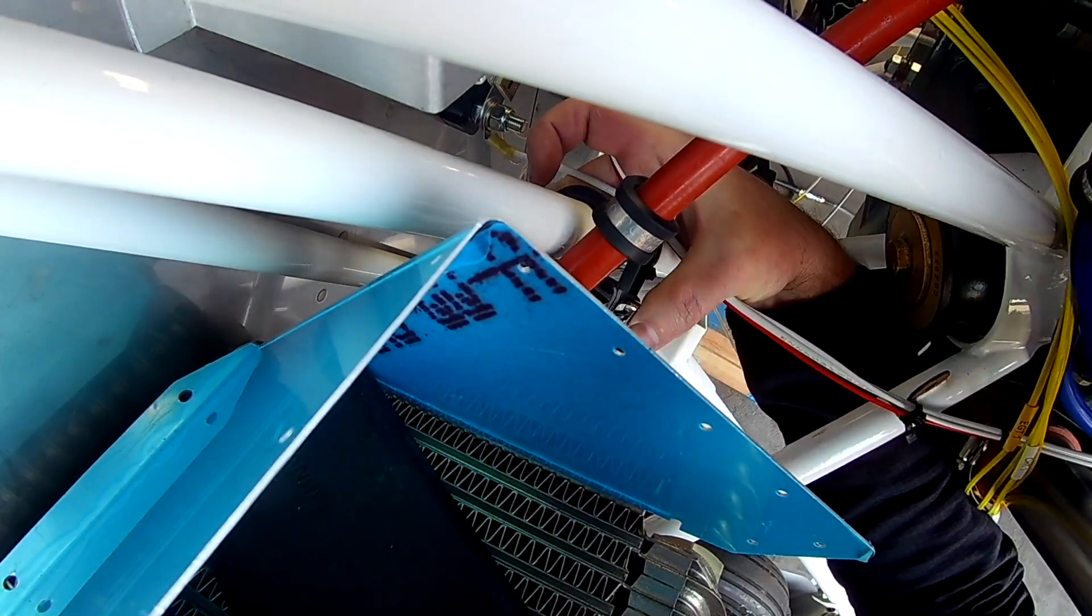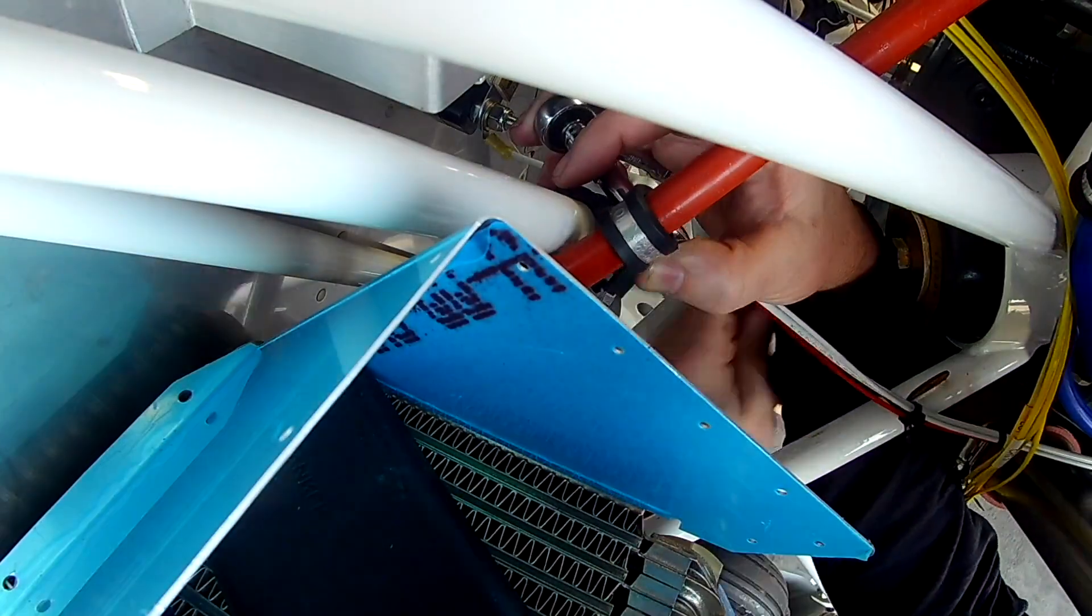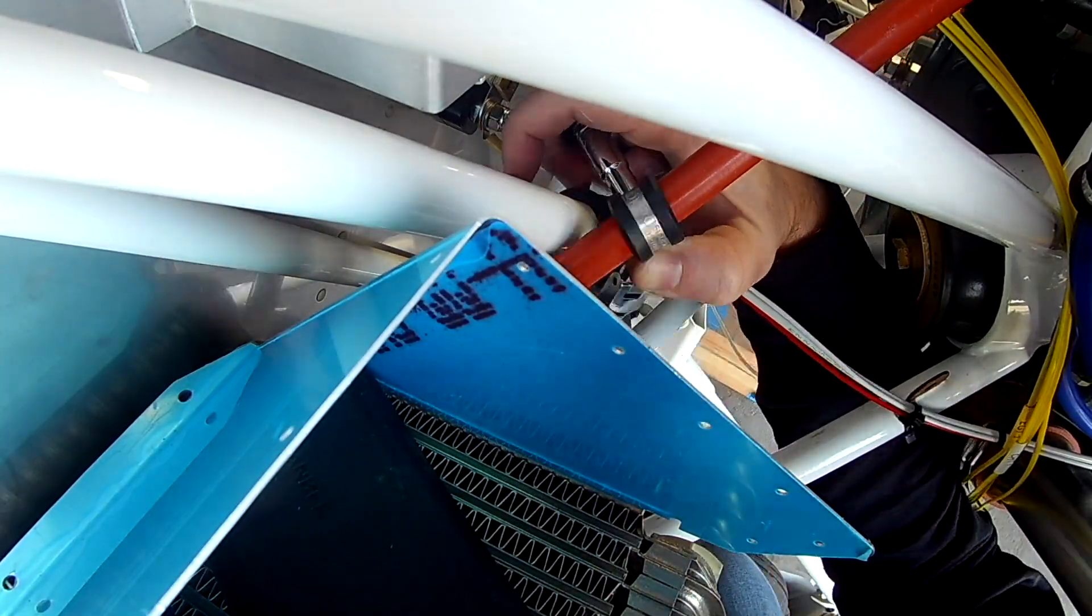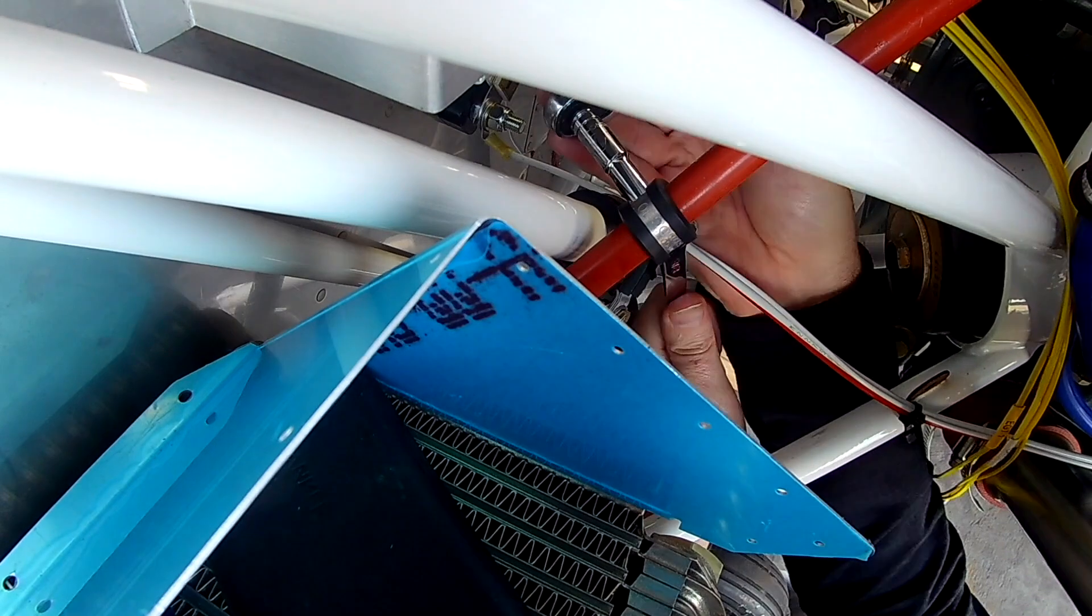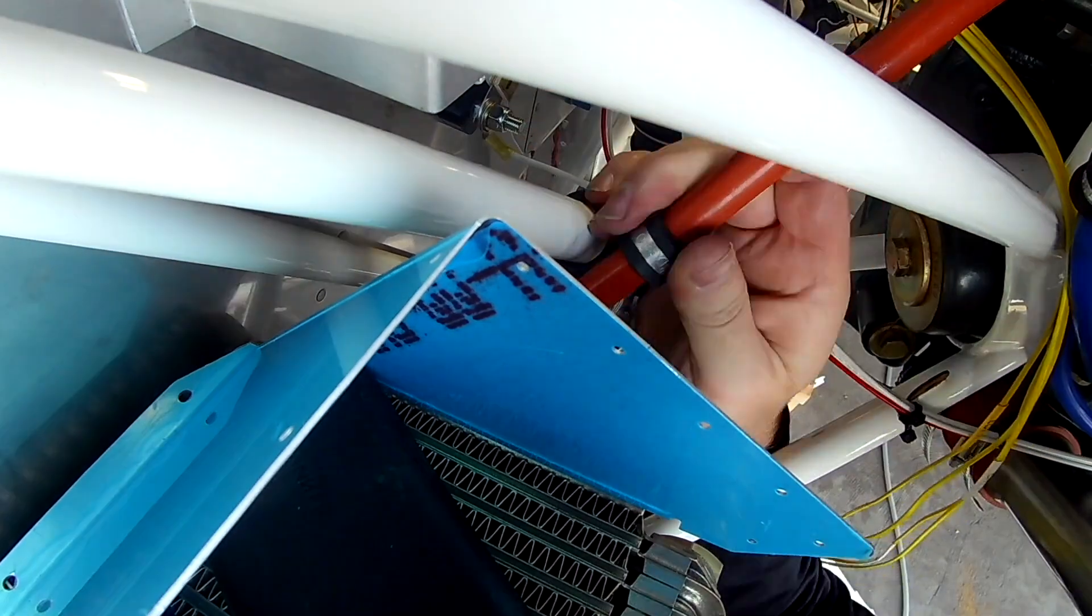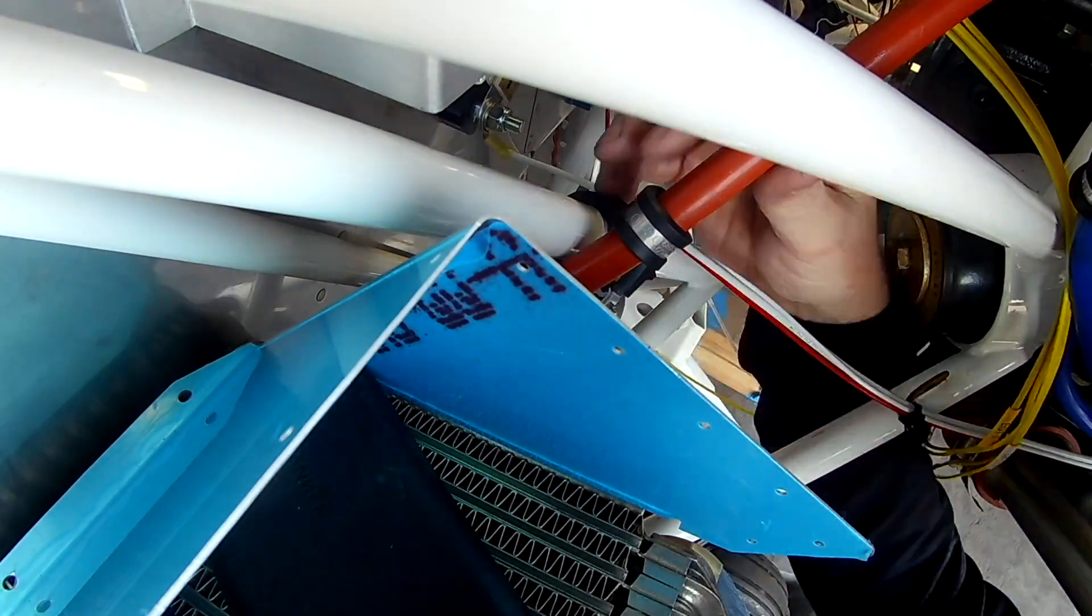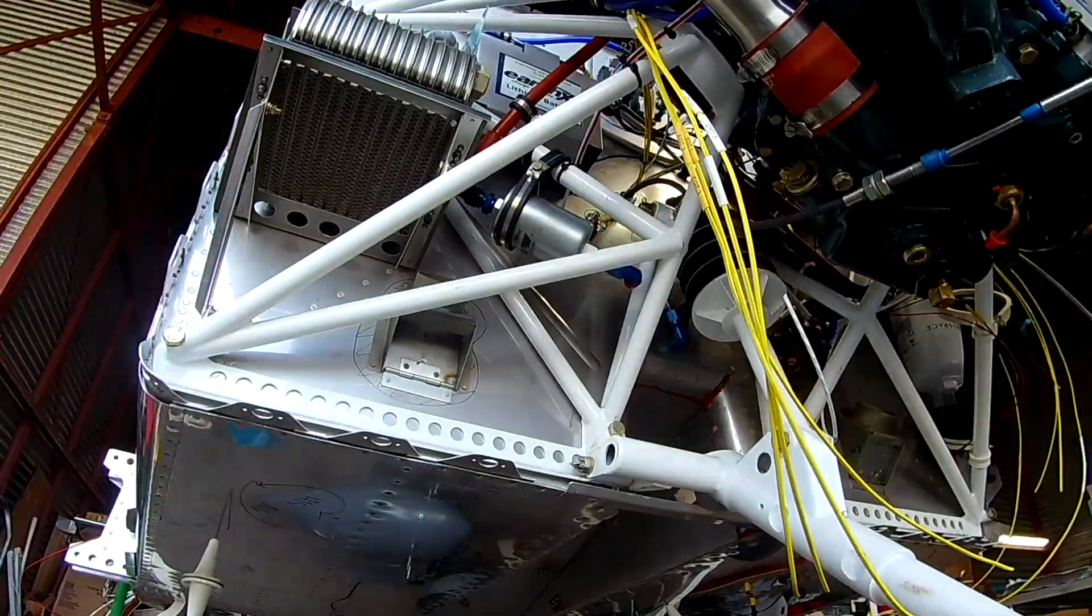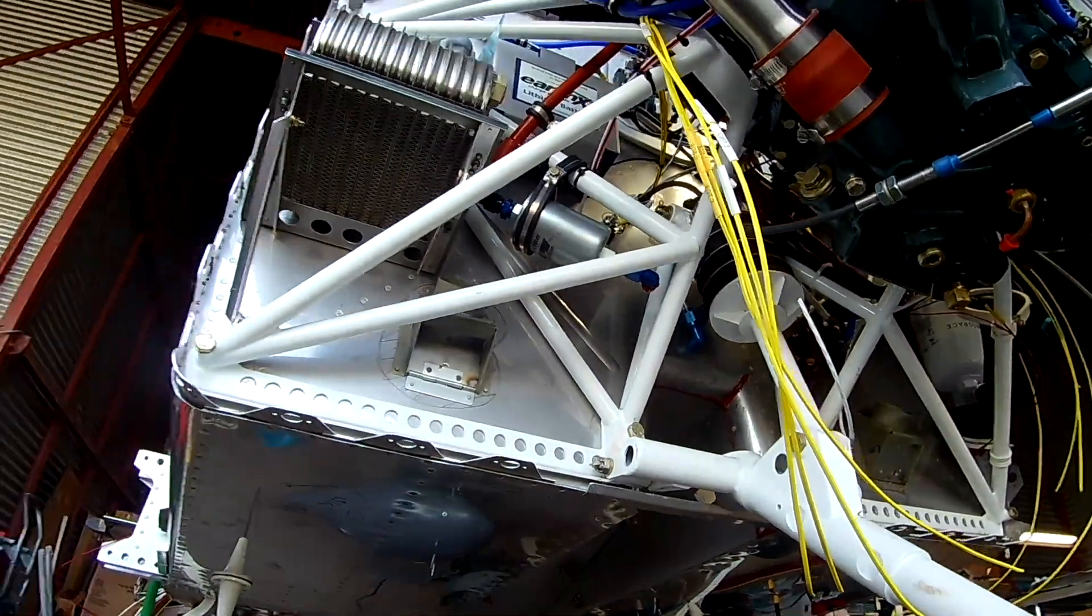There's one thing about the Adel clamps I'll note. Unlike the rest of the Adel clamps throughout the plane, like on the back side of the firewall, all the Adel clamps on the front side of the firewall are put in place with AN hardware. In some other places, Vans tells you to use stainless steel screws and lock washers—there's nothing wrong with that.